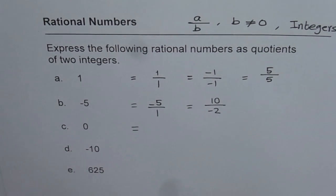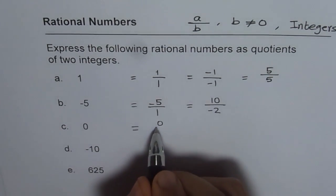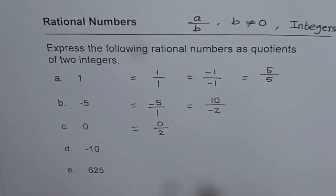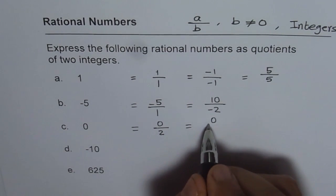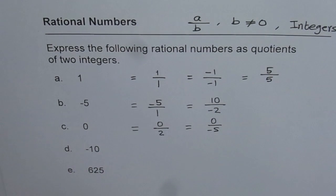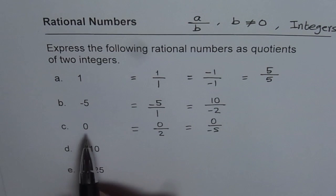Let's express 0 as a rational number. As you know, 0 over anything is 0. So all these numbers could be written as equivalent of 0 as a rational number. 0 itself is also a rational number. Likewise, I would like you to write down -10 and 625 as rational numbers with quotients of two integers. Thank you.